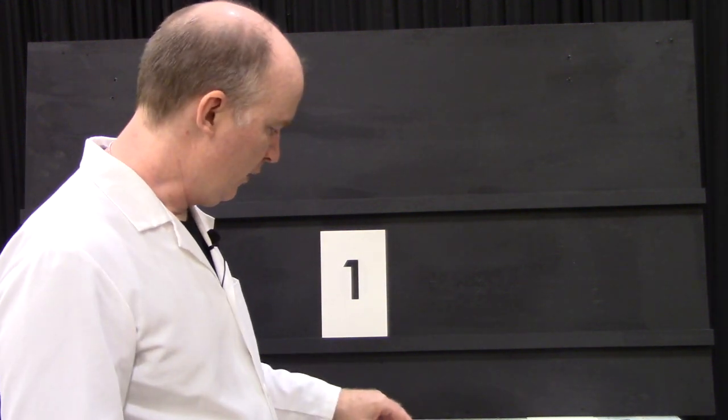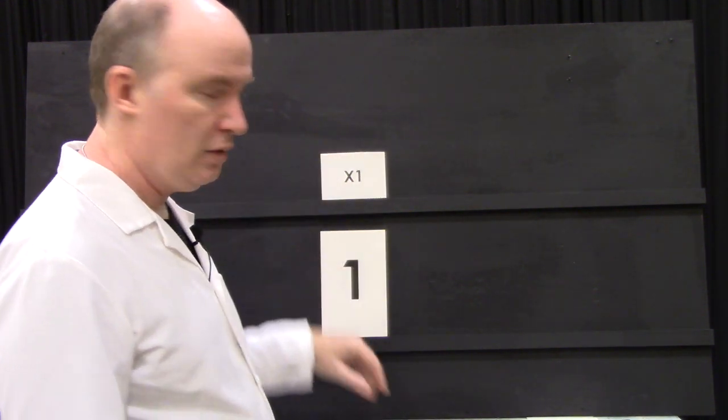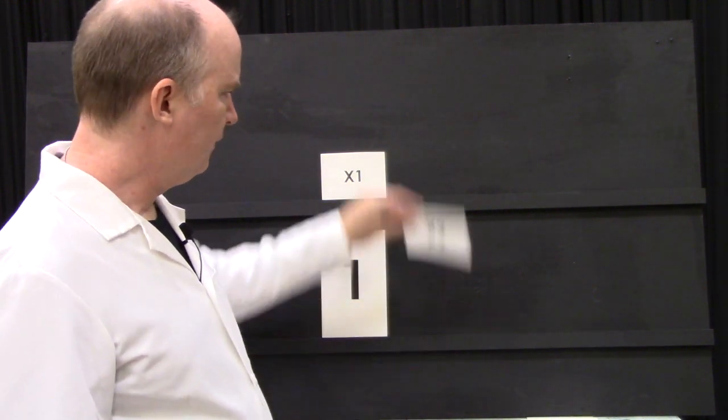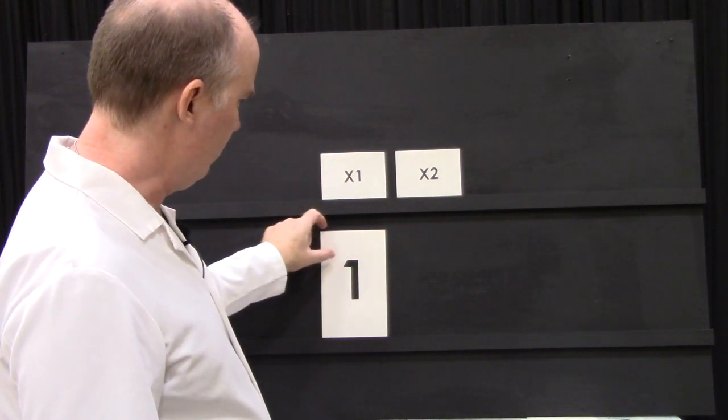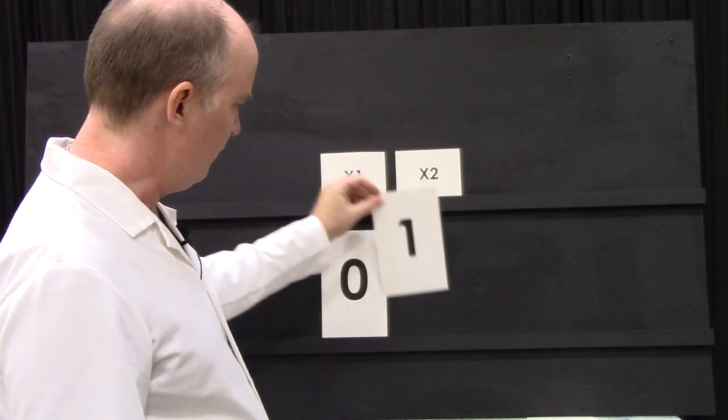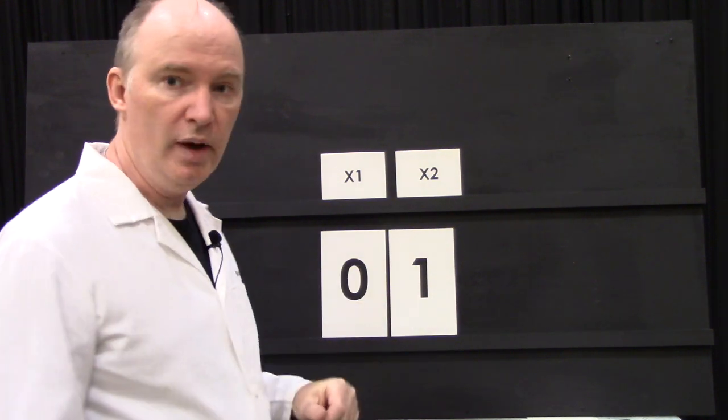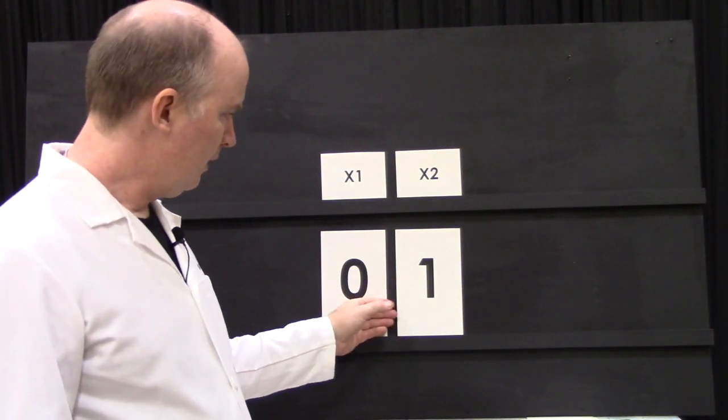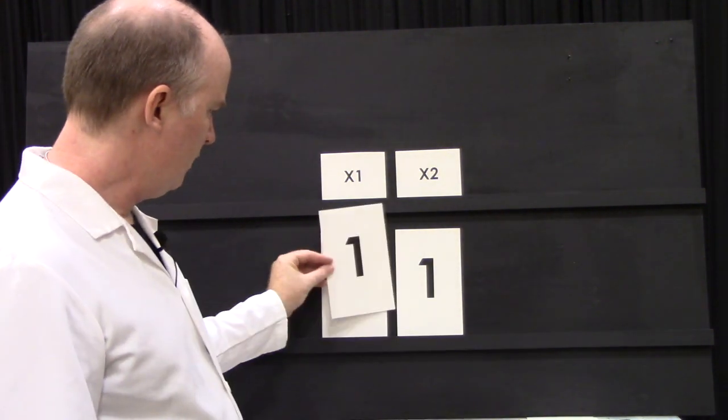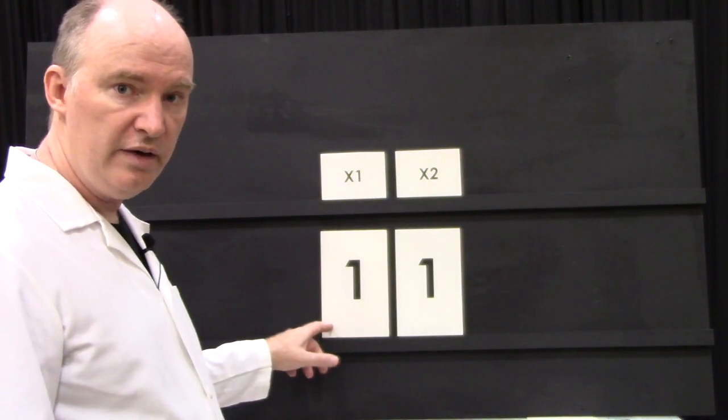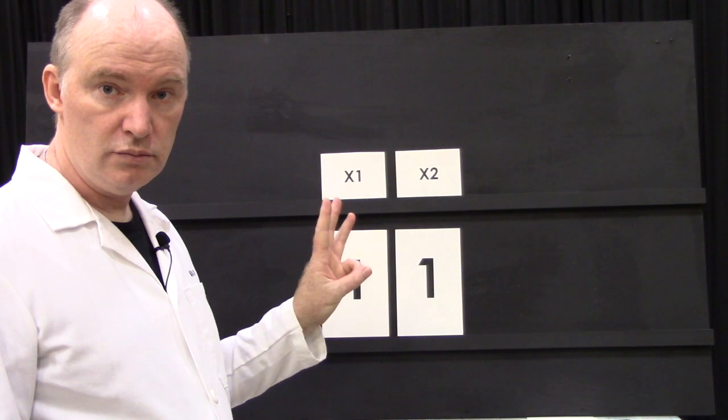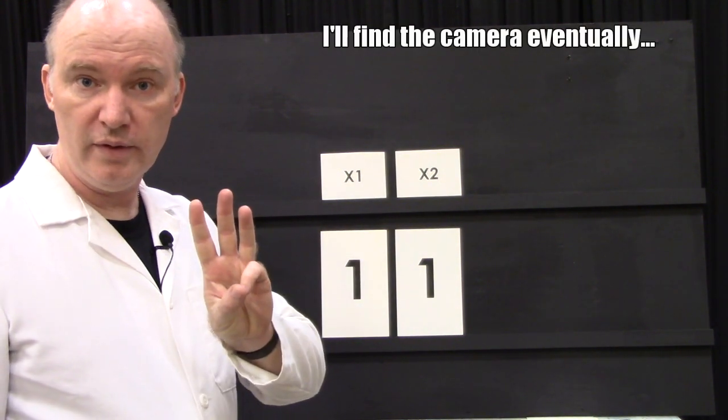So what we do is we once again say that this is our ones place, except instead of multiplying it by 10, we multiply it by 2. And so now to count to 2, you have a 0 in the ones place and a 1 in the twos place. If we want to go to 3, we have a pair of things and a single thing, total of three things.